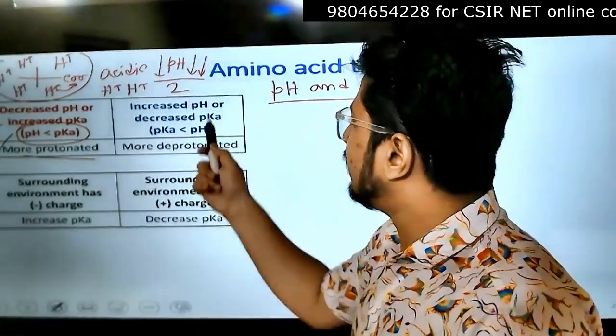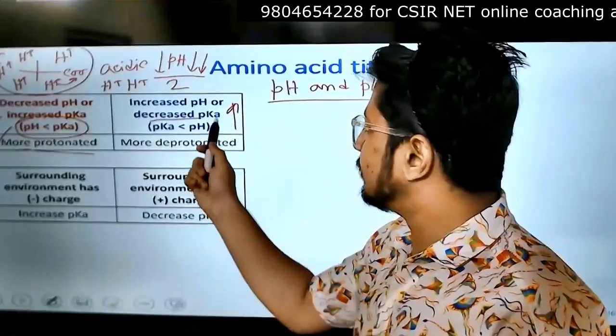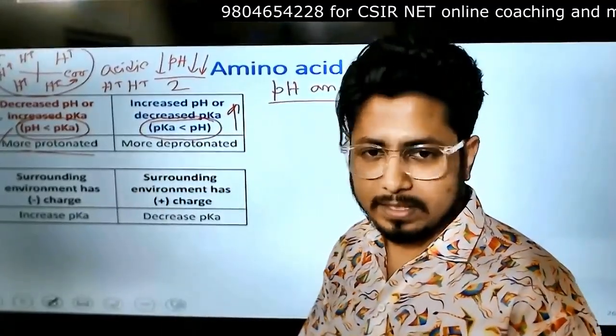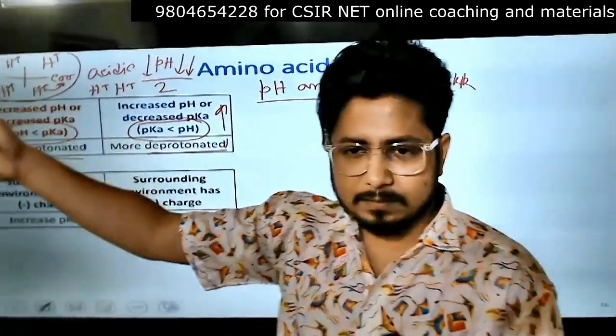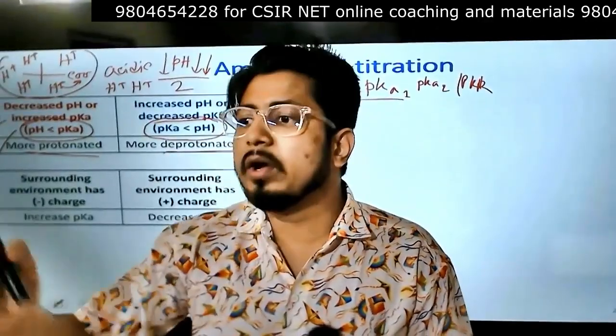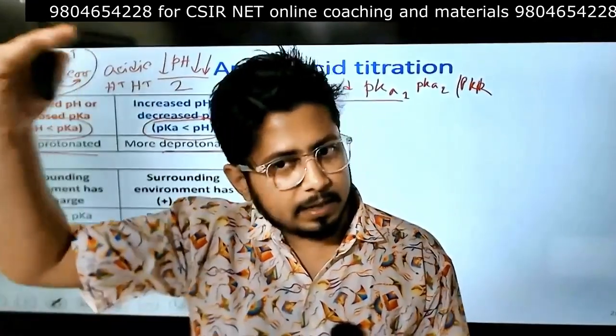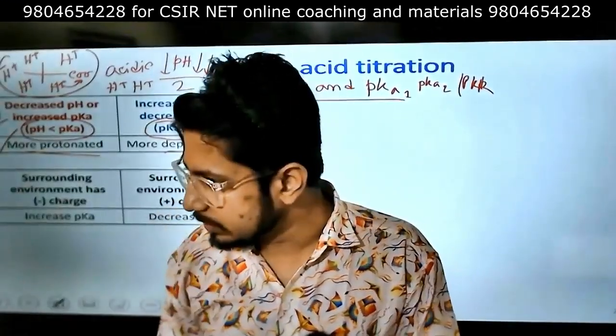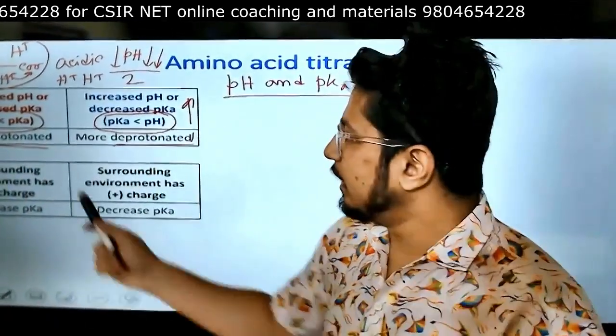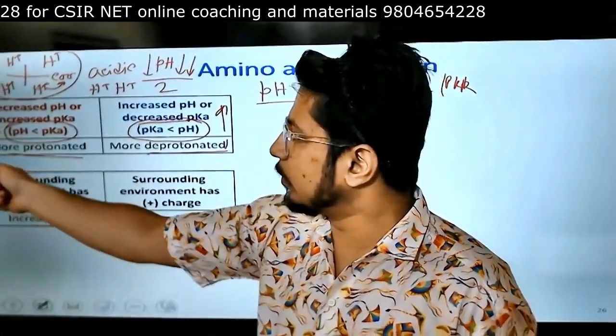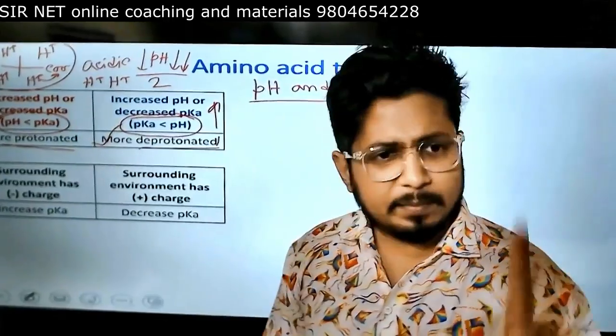If we increase the pH or make the environment basic or alkali, so the pKa is less than pH, then there will be reversal. Deprotonation will begin. Why? Because less proton is present in the environment. So COOH will lose proton, NH3+ will lose proton. If the pH is less than pKa, more protonation. pKa is less than pH, more deprotonation.